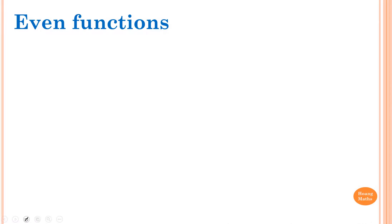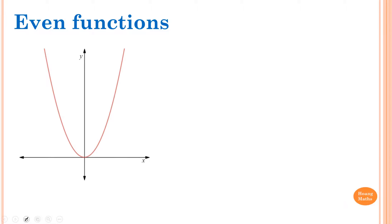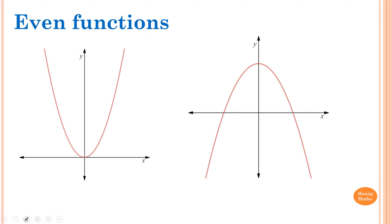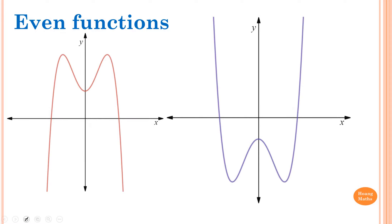Even functions. What do they look like? They look like something like this, or an upside down parabola. What's so special about even functions? They are symmetrical about the y-axis. So if you think about it, the area of this side here is the same as the area of this side. They are symmetrical about the y-axis.